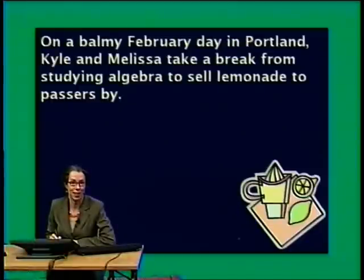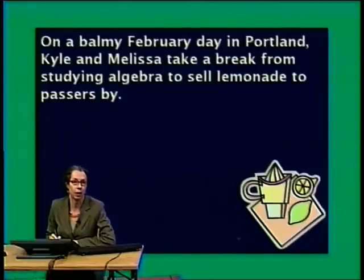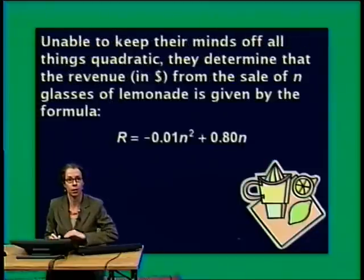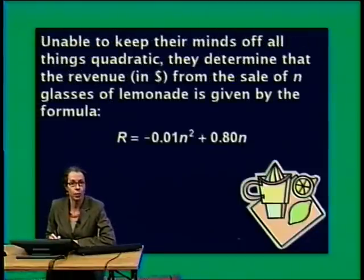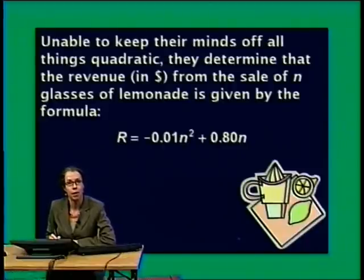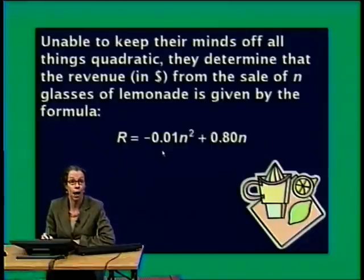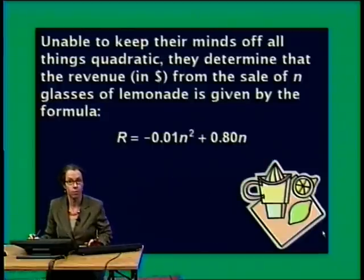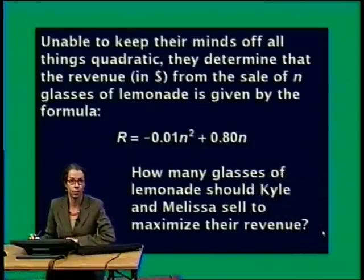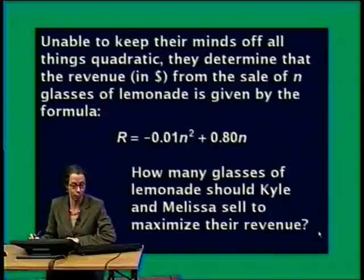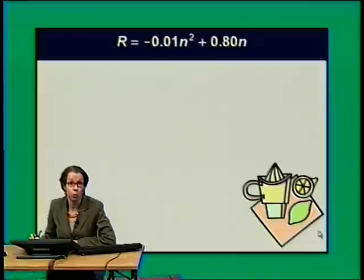On a balmy February day in Portland, Kyle and Melissa take a break from studying algebra to sell lemonade. They determine the revenue, measured in dollars, from the sale of n glasses of lemonade is given by a quadratic formula. The leading coefficient is negative, so the graph will be a parabola opening down. The question: how many glasses of lemonade should Kyle and Melissa sell to maximize their revenue? We'll find the vertex to get that information.